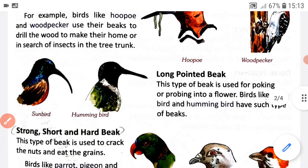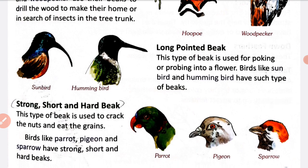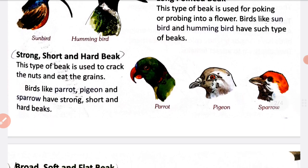The next type of beak is the long pointed beak. This type of beak is used for poking or probing into a flower. Birds like sunbird and hummingbird have this type of beak - long and pointed. This beak is used for poking or probing to get nectar from flowers.